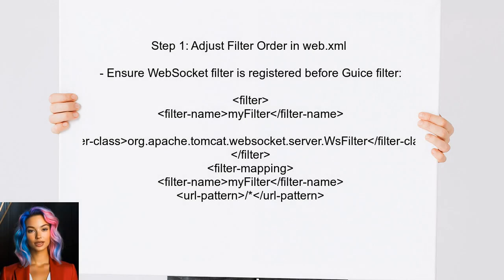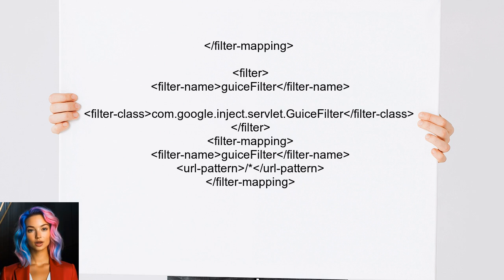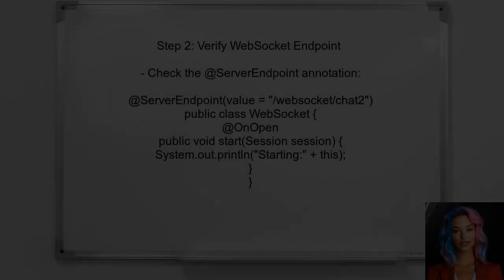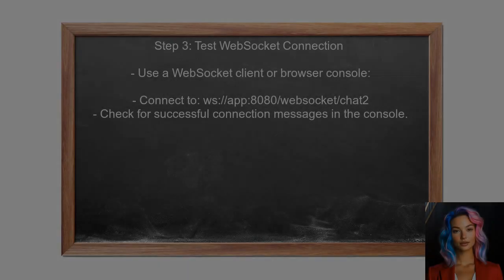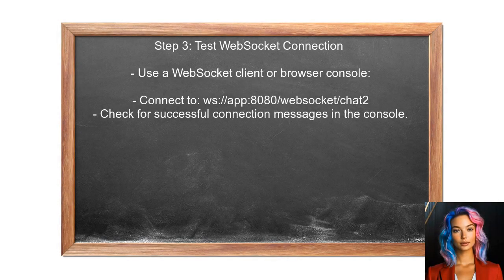To resolve the issue with the WebSocket not working alongside Geist filters, first ensure that the WebSocket filter is registered before the Geist filter in the web.xml file. Next, verify that the WebSocket endpoint is correctly defined and accessible. This involves checking the @ServerEndpoint annotation to ensure it matches the intended URL. Additionally, test the WebSocket connection using a tool like a WebSocket client or browser console to ensure the connection is being established correctly.